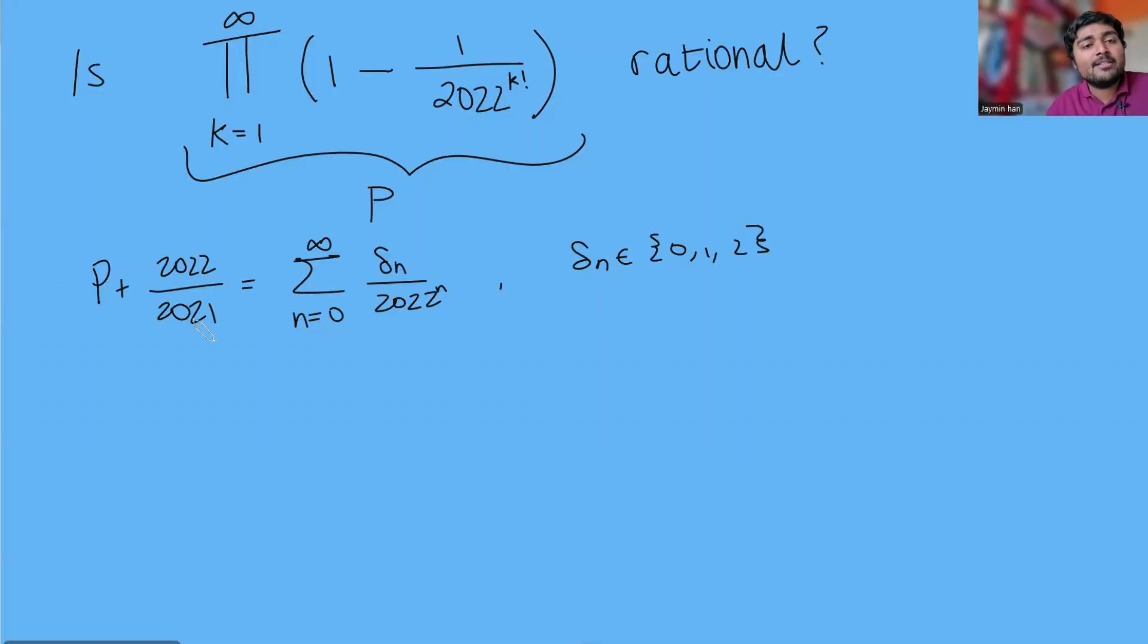P plus 2022 over 2021 is this infinite sum here and if we stare at this infinite sum we realize that this is actually just writing this P plus 2022 over 2021 in base 2022. So if we were to explicitly write this out this would be delta nought decimal point delta one delta two delta three and so on and this is just in base 2022.